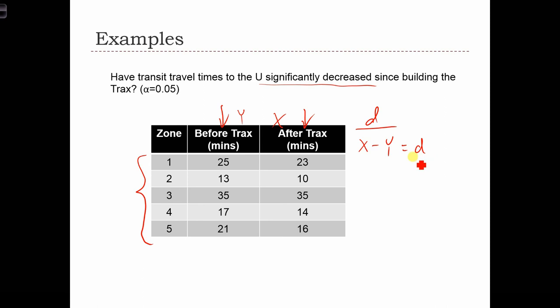Then really what we're going to be looking for is delta negative. Is delta less than 0? Because if delta is less than 0, well that means that this x, the travel time after tracks, is going to be less than the travel time before tracks. And therefore, this d should be below 0. It should be a negative number. So the null hypothesis in this case is that delta equals 0. And the alternative hypothesis is that delta is less than 0. That difference is negative. In other words, the travel times have decreased.